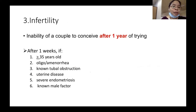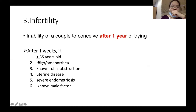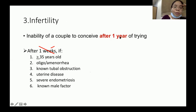The third topic is infertility. The formal definition is the inability of a couple to conceive after one year of regular coitus. However, infertility workup can begin after six months if the female patient is already 35 years and above.